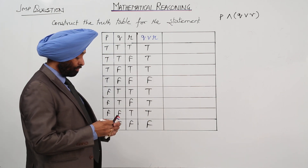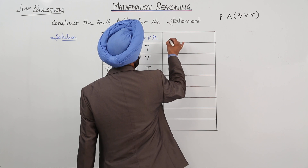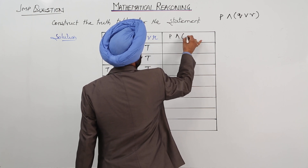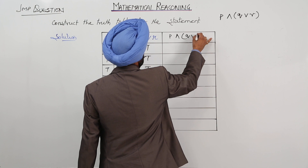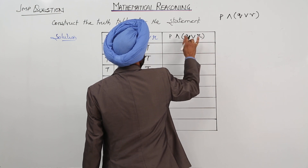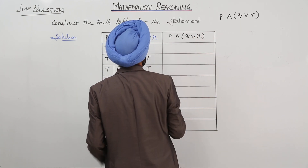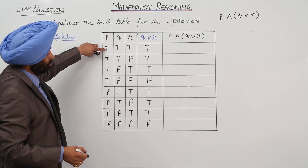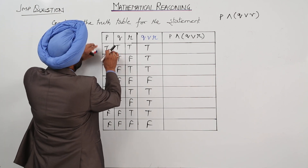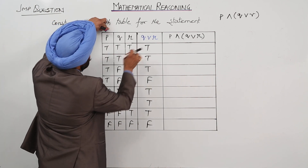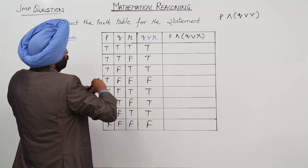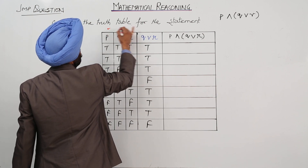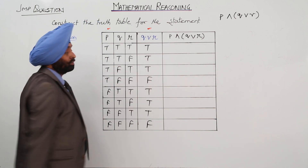Now we are having P AND (Q or R). So P is one statement, and we are going to apply the AND operation between P and the result of Q or R that we just computed.